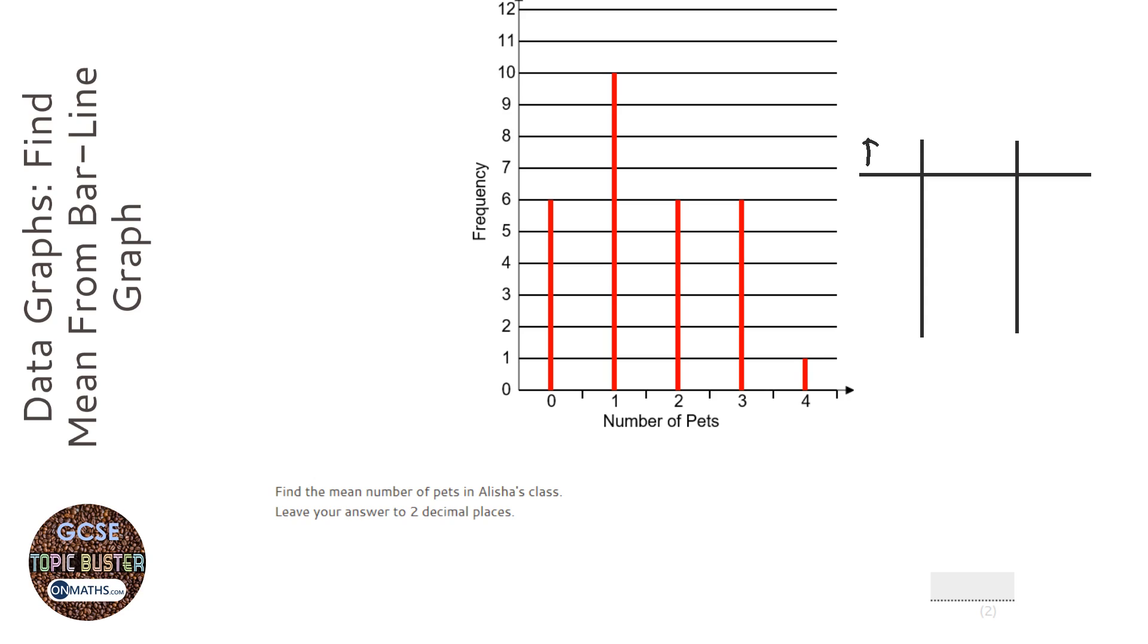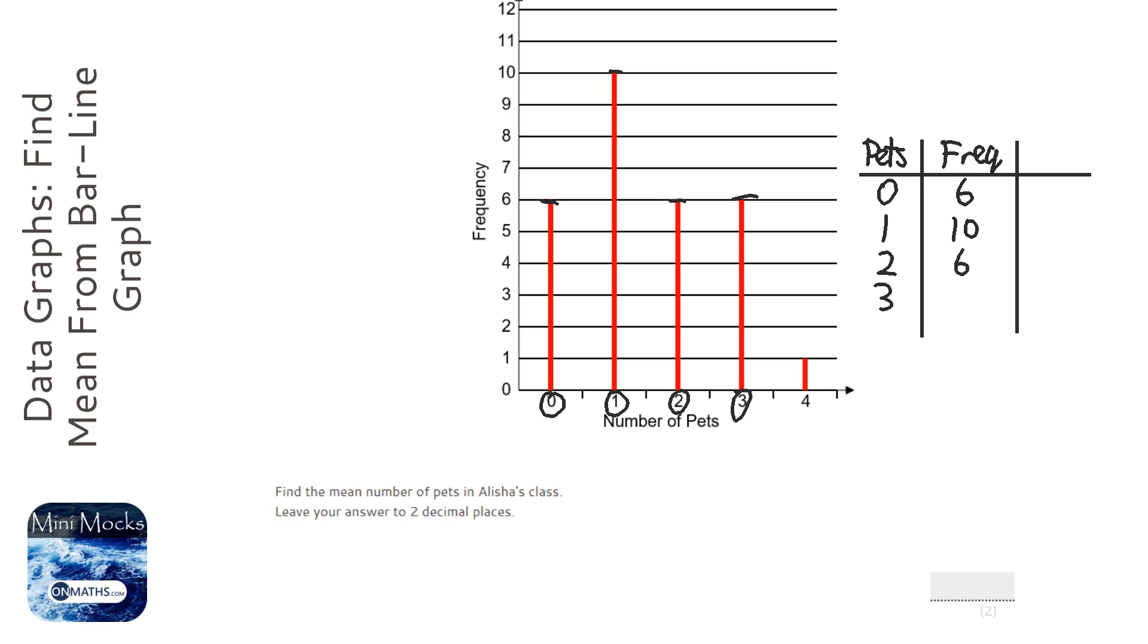We've got pets, we've got the frequency, and we'll worry about the last column in a second. So, 0 pets, the frequency is 6; 1 pet, the frequency is 10; 2 pets, the frequency is 6; 3 pets, the frequency is 6; and 4 pets, the frequency is 1.